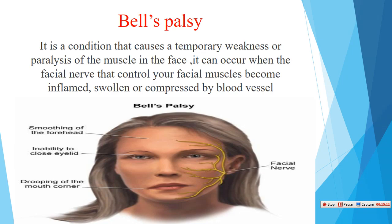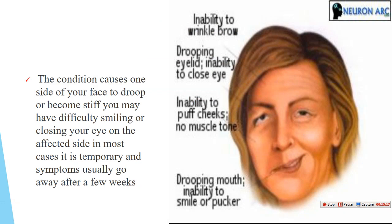The condition causes one side of the face to droop or become stiff, with difficulty smiling and closing the eye on the affected side. It is typically temporary and usually resolves after a few weeks. Signs include inability to wrinkle the brow, drooping of the eyelid, inability to close the eye, inability to puff the cheek, and drooping of the mouth — because the facial nerve controls all these actions. If inflamed or compressed, it causes unilateral paralysis.